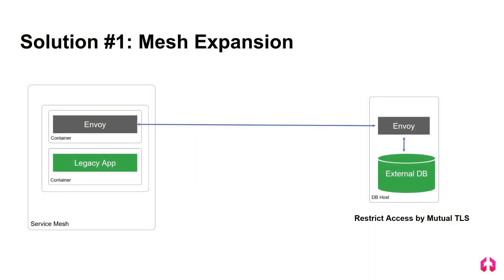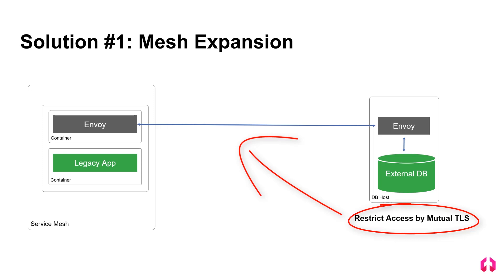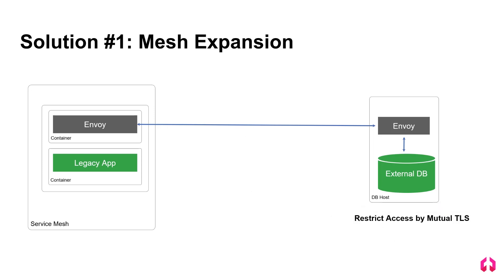There are three ways that we can approach this solution. The first solution is to use mesh expansion. In this case, we'll install the Envoy proxy onto the database server host and communication will be secured using mutual TLS. This is not always possible if the database is running on a platform that cannot run the Envoy proxy, like a mainframe.